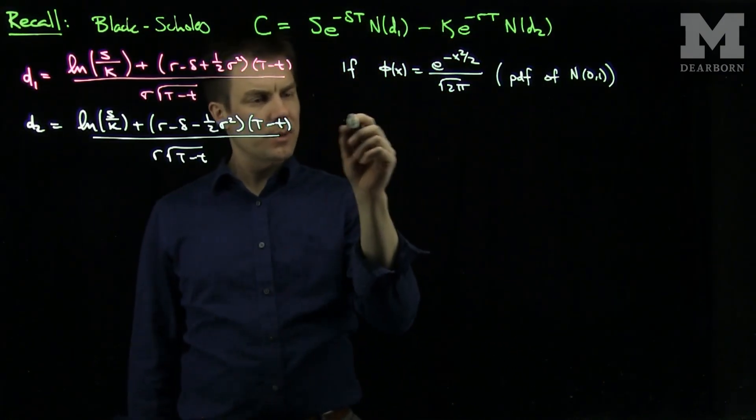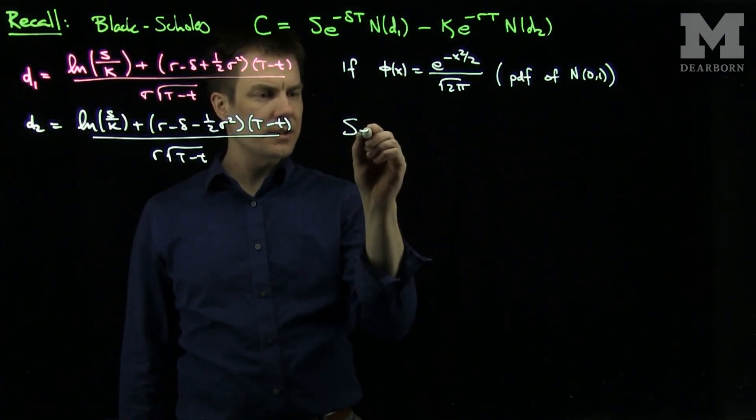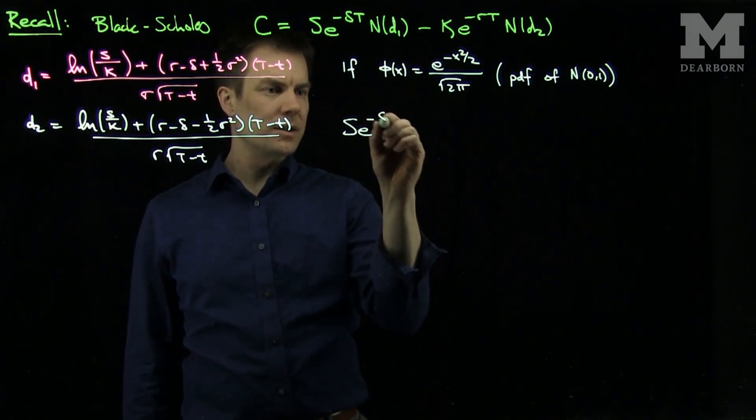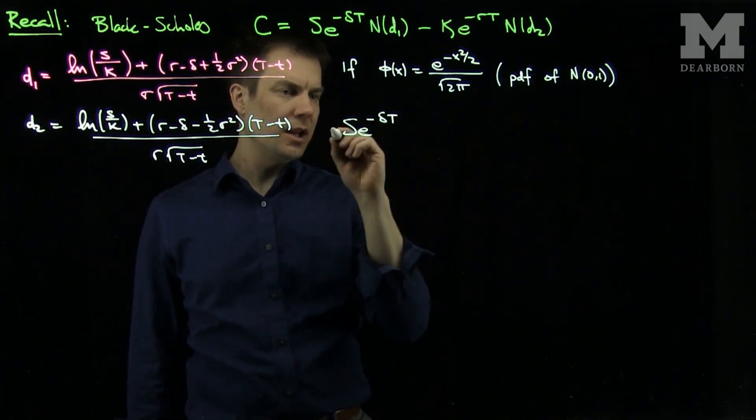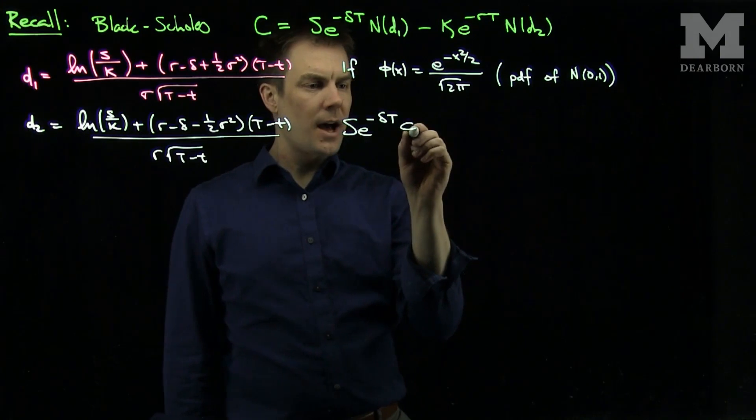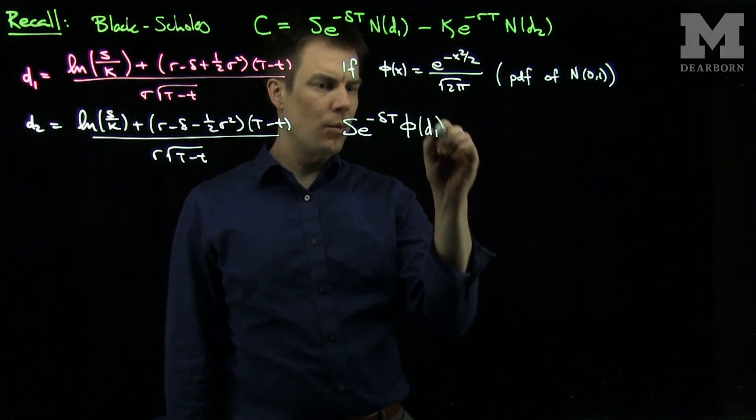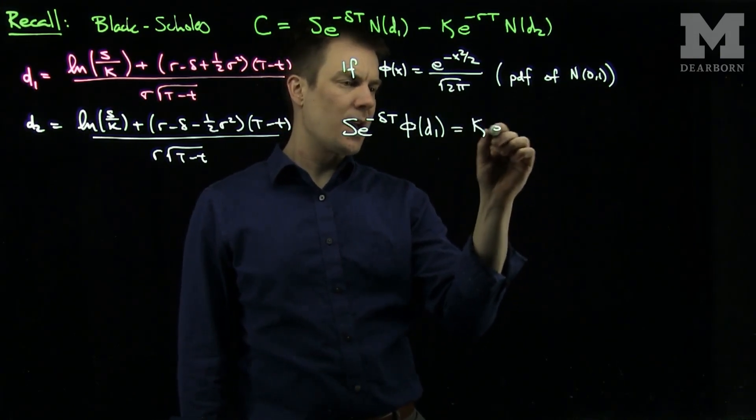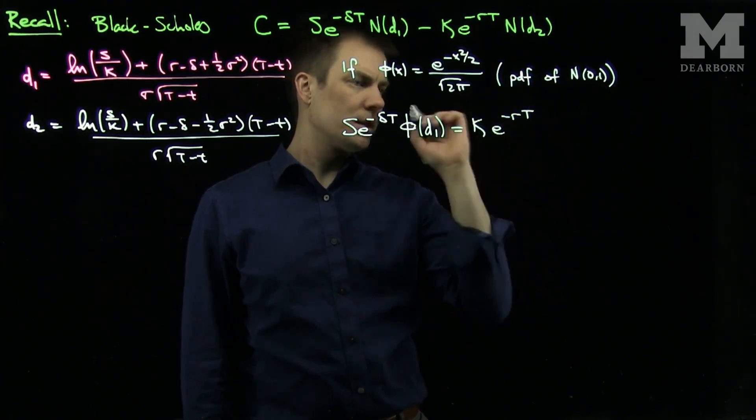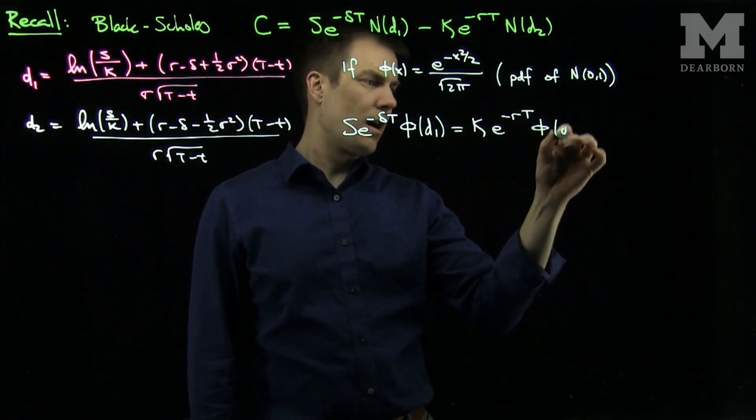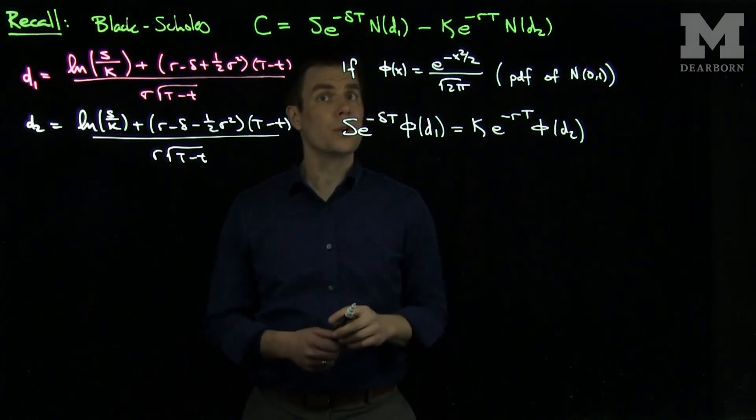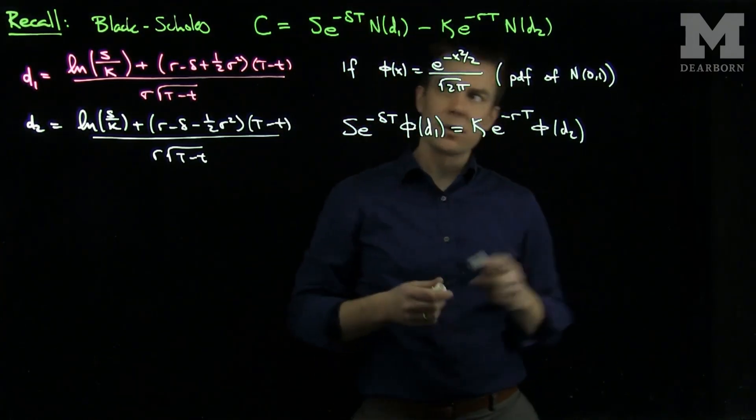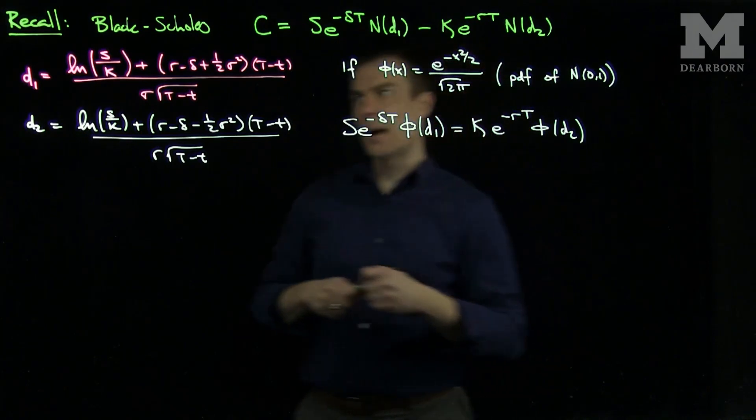Then we've seen previously that s e to the minus delta t phi of d1 is k e to the minus rt phi of d2. So we'll use this formula in conjunction with Black-Scholes to derive the delta of a call option.